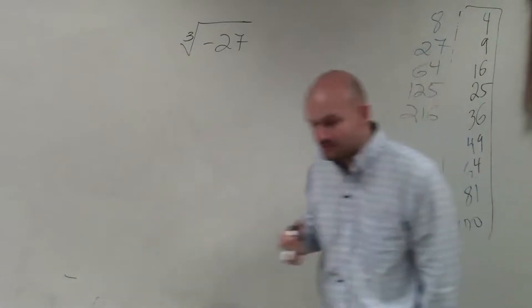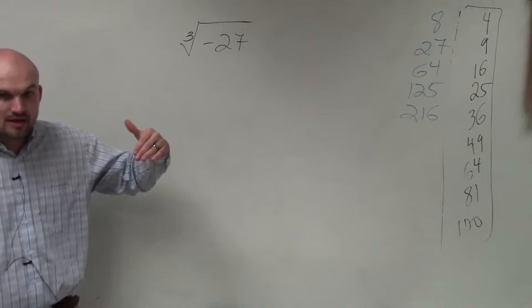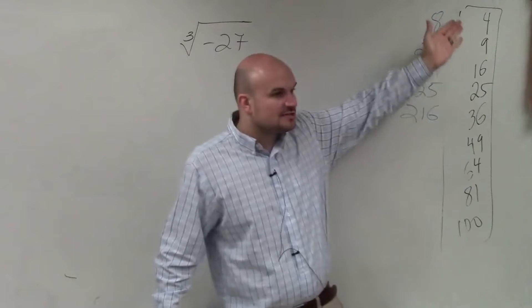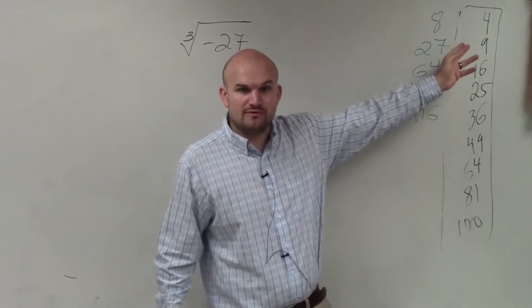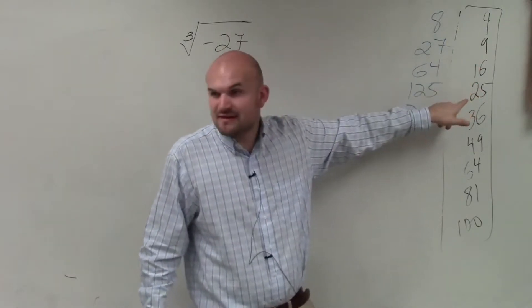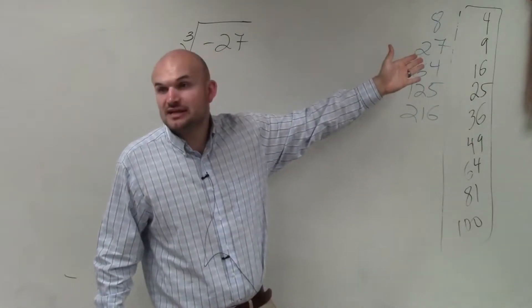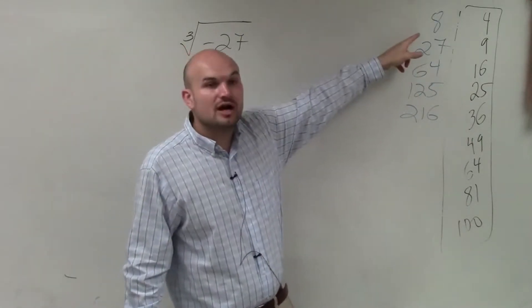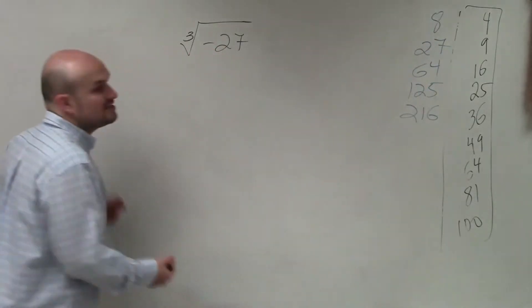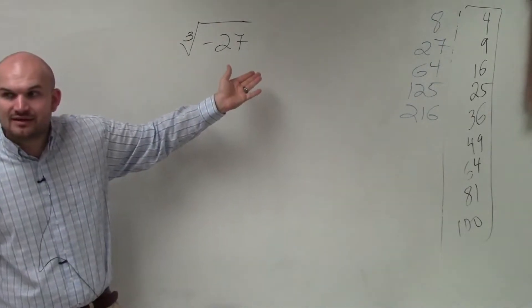So in this case, what I'm trying to do is identify what number multiplied by itself 3 times gives us negative 27. Well, ladies and gentlemen, I kept these numbers up here because I want you guys to write these down. Here is a list of square numbers. These are all numbers we can take the square root of. 2 times 2 is 4, 3 times 3 is 9, 4 times 4 is 16, 5 times 5 is 25. These are what we call cube numbers. These are numbers you can take the cube root of because 2 times 2 times 2 is 8, 3 times 3 times 3 is 27. So what you notice is what number multiplied by itself 3 times gives us negative 27? Negative 3.